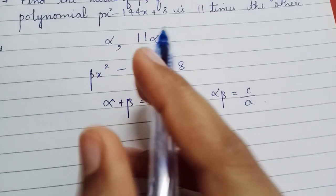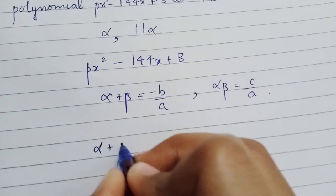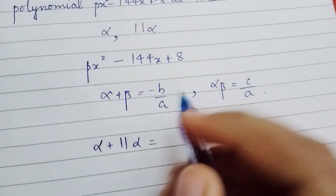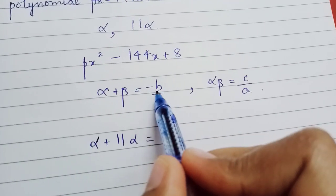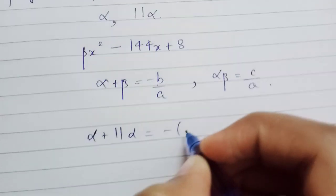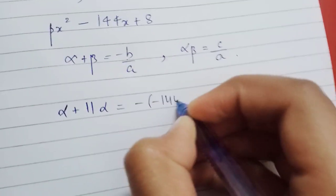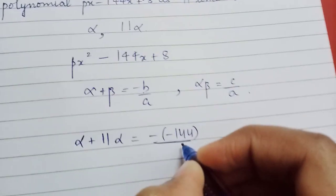So here β is 11α. We can write α + 11α = -b/a, where b = -144, so this equals 144/p.